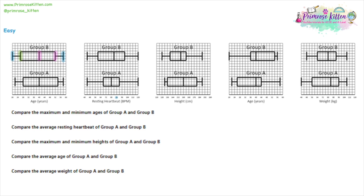In question one, we've been asked to compare the minimum and maximum ages of group A and group B. The first thing to do is be really clear about what we're looking at — the minimum and maximum values. We'll highlight the minimum values in blue and the maximum values in green. Now they're highlighted, we can compare them. Looking at the minimum values, in group B the minimum value is 20 years old, but in group A it's 22 years old.